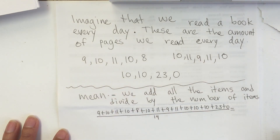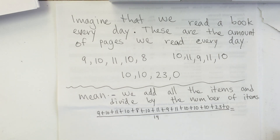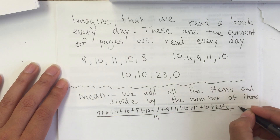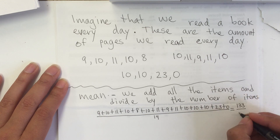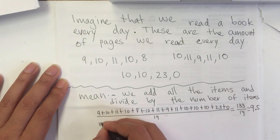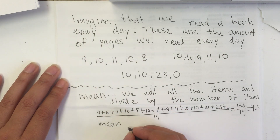I want you to pause and add it. You can use a calculator if you want because I'm going to give you the answer right now. If you want to try it, pause the video first. When I added all of this, I got 133 divided by 14, which equals 9.5. So my mean for this data is 9.5.